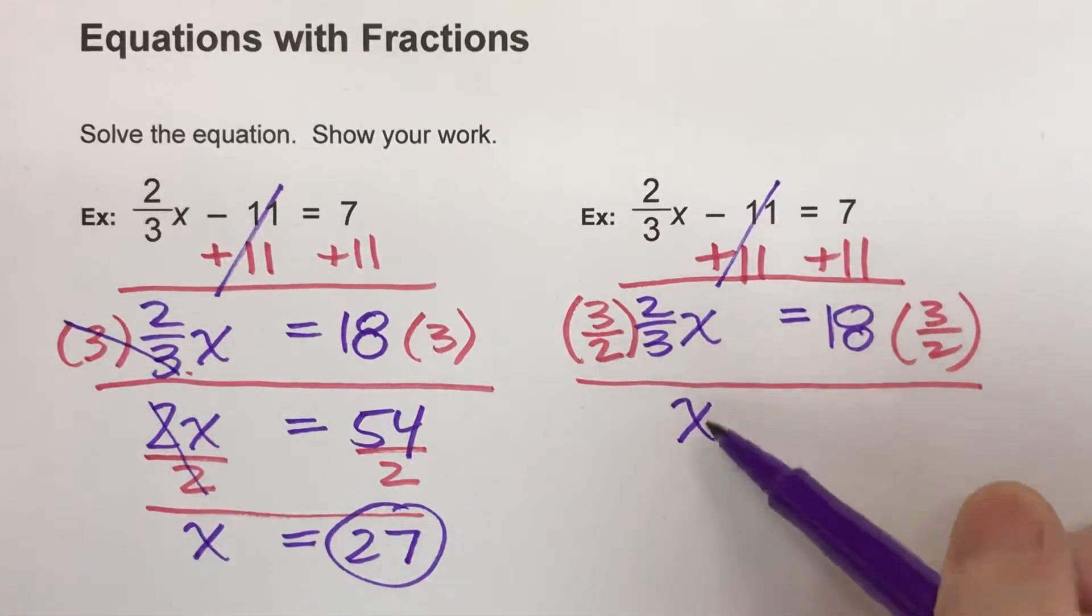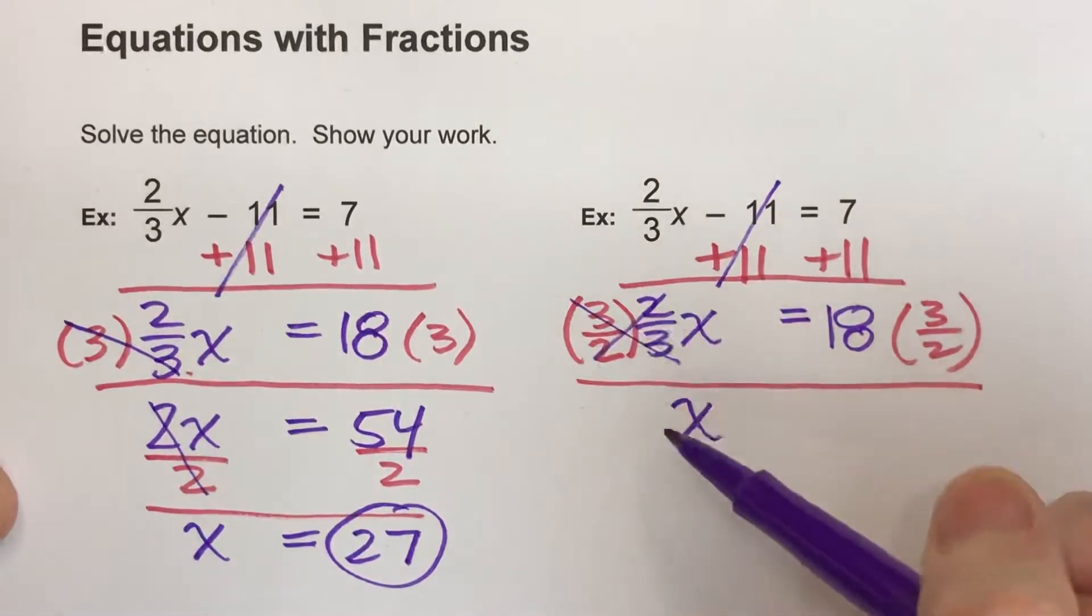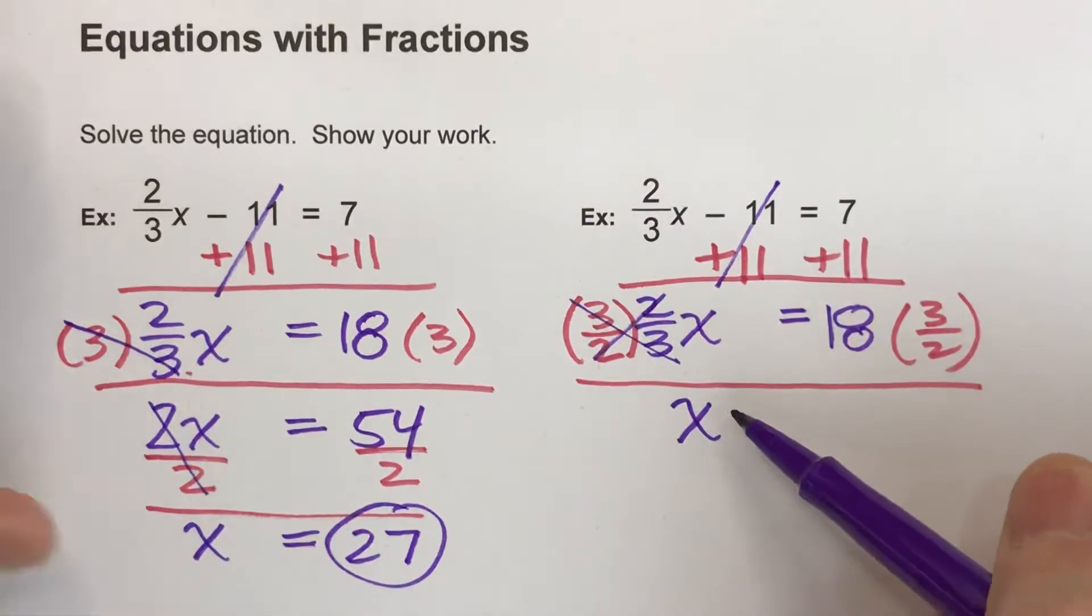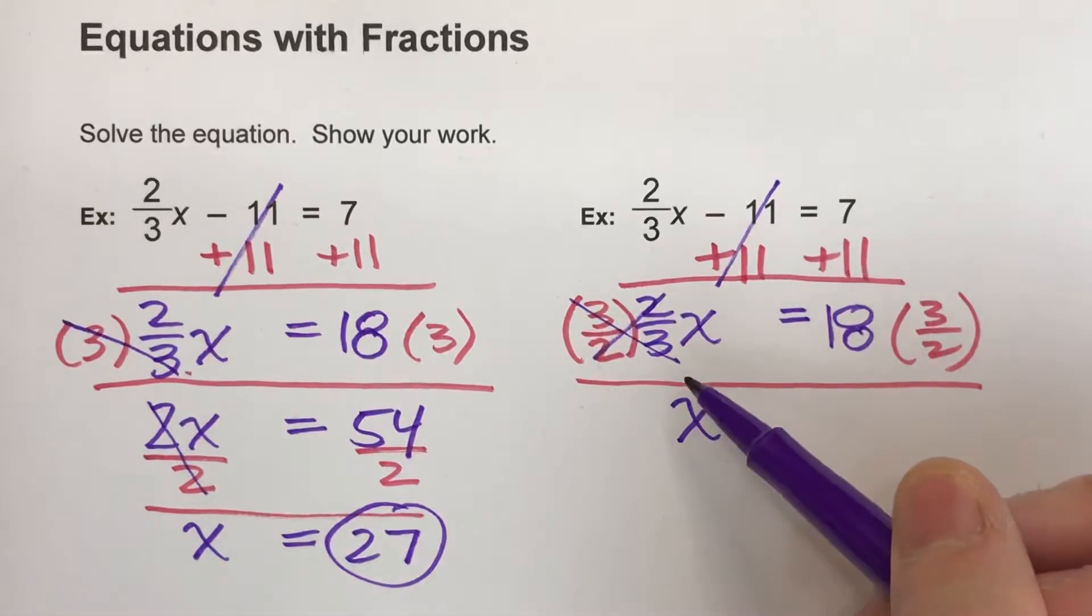So I end up with 1 whole x. In other words, these two fractions pretty much undo each other to form 1. And that's what we want. We want 1x. So we're basically eliminating the fraction by doing that.